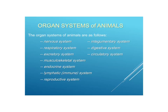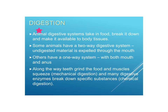We're now going to go through some of the organ systems of animals briefly. Starting with digestion: the animal digestive system's job is to take in food, break it down, and make it available to body tissues — breaking it down into a form that's usable by the body so it can be taken in by cells.